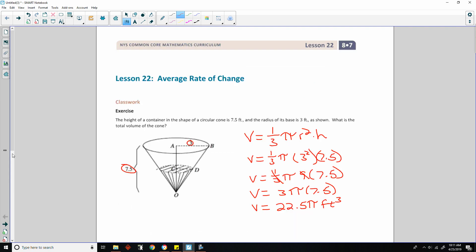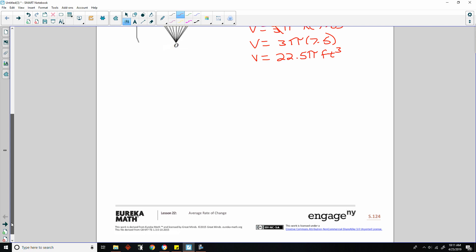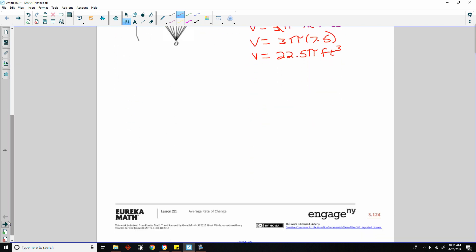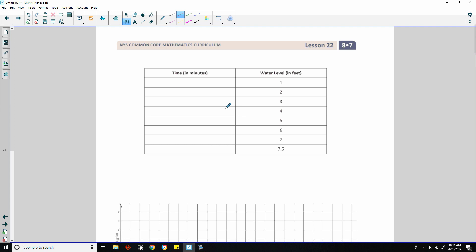Did I miss something down below? No. Exercise, lesson 22, exercise. And go on to the next page. Time in minutes. Okay, so they're now giving us this table. Time in minutes is blank. Water level in feet, 1 all the way up to 7.5. So they want us to find how long it would take to fill this and how long it would take to get to all these levels up until it was full.